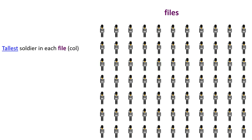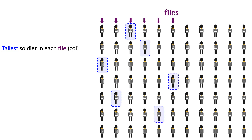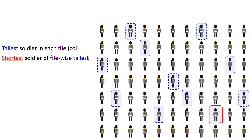Next, let's pick the tallest soldier in each file: one, two, three, four, five, six, seven, eight, nine, ten, and eleven. From these we pick the shortest soldier — the shortest of the file-wise tallests — but remember that that soldier is still the tallest in his own file.